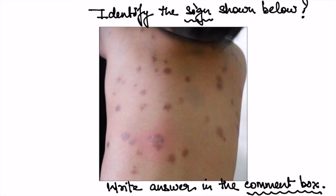I hope this is clear to all of you. Now today again, I'm going to show you one image. As you can see, over the trunk of this child there are various hyperpigmented lesions. There is a change visible over this lesion, and this change is known as a sign. Can you identify the sign? Answer it in the comment box — I will discuss this tomorrow. Thank you very much.